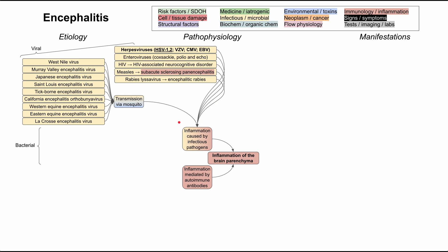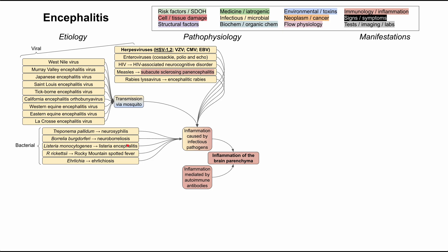Less common are the bacterial etiologies, but they still occur. Treponema pallidum, the agent that causes syphilis, can cause neurosyphilis, which has an encephalitis component. Borrelia burgdorferi can cause neuroborreliosis. Listeria can cause listeria encephalitis. Rickettsia rickettsii can cause Rocky Mountain spotted fever, which has an encephalitis component. Ehrlichia can cause ehrlichiosis, which also involves encephalitis.